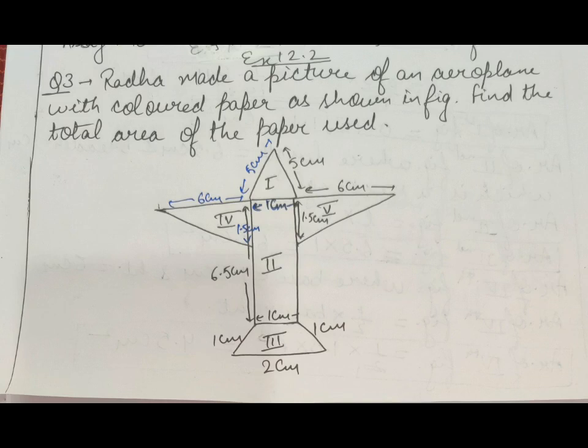In our last class of chapter number 12, we are doing some questions. Please listen carefully. Here is question number 3 from exercise 12.2: Radha made a picture of an aeroplane with colored paper as shown in the figure. Find the total area of the paper used. You can see that a picture is given to us in which five figures are given.